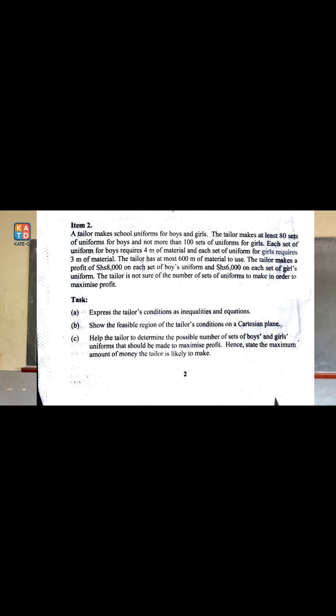Under the tasks: Part A, express the tailor's conditions as inequalities and equations. Part B, show the feasible region of the tailor's conditions on a Cartesian plane. Part C, help the tailor determine the possible number of sets of boys and girls uniforms that should be made to maximize the profit. Hence, state the maximum amount of money the tailor is likely to make.